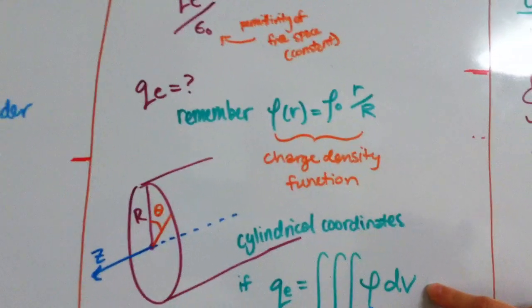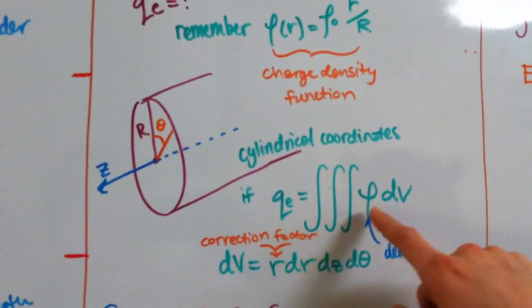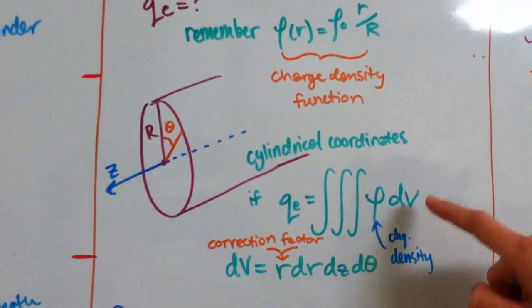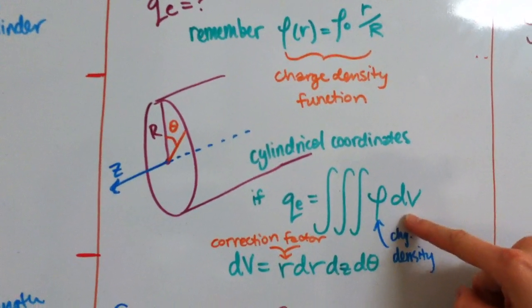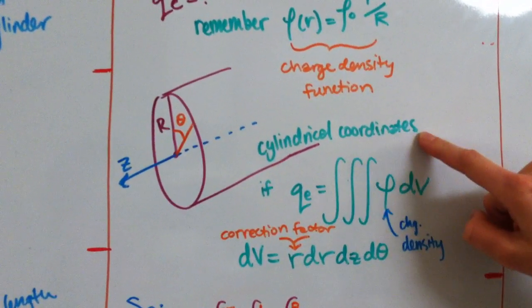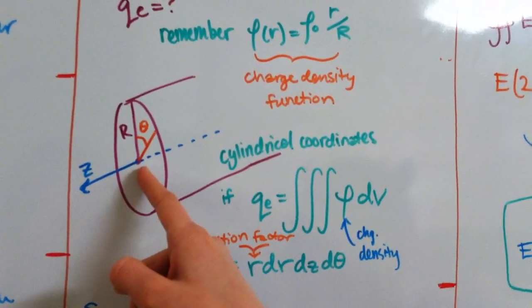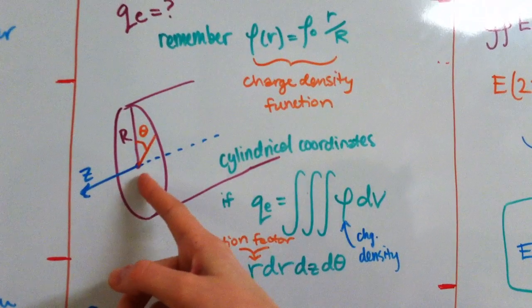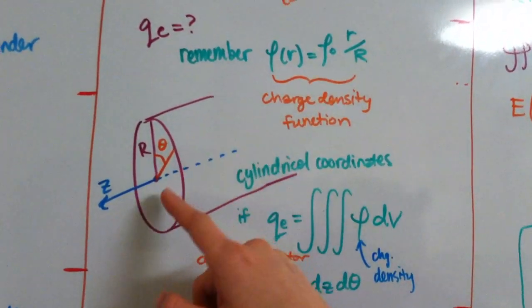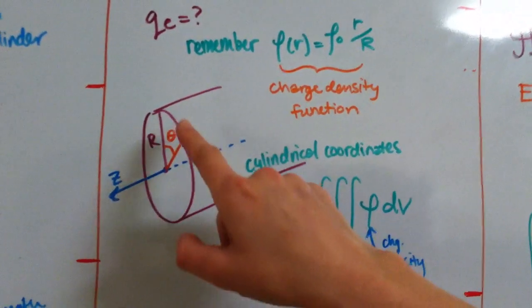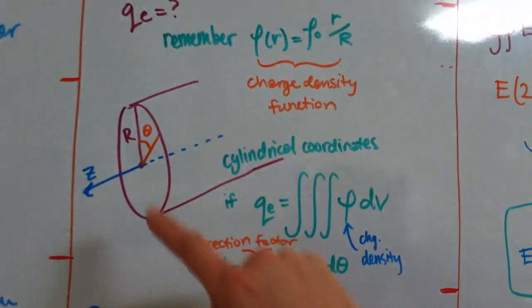we're going to have to use this integral here, where QE, the enclosed charge, is the triple integral of the charge density times tiny volume dV. And we're going to use cylindrical coordinates, because we have a cylinder, so it makes it really easy. Remember, cylindrical coordinates, we have three dimensions of z, which is basically length, and r, which is the radius of the cylinder, and theta, which is around the cylinder in radians.